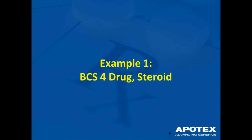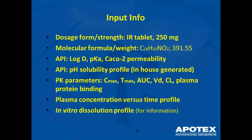Example one is a BCS-4 drug with a steroid structure, formulated as an immediate release tablet at 50 mg dosage strength. Molecular weight, molecular formula, log-D, pKa, and Caco-2 permeability are known. pH solubility profile data was generated in-house. PK parameters including Cmax, Tmax, AUC, volume of distribution, total body clearance, and plasma protein binding were reported in the literature. An in vitro dissolution profile was also available, used for informational purposes only.